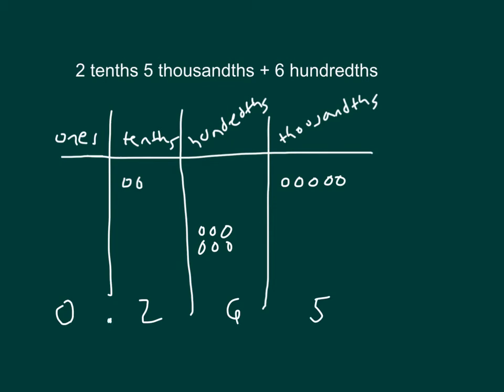There's a decimal point. Let's use our written method. First number is written as 2 hundred 5 thousandths. Next number is written as 6 hundredths. We can put a 0 in the thousandths place there. And we can show that addition. Again, the answer is 2 hundred sixty-five thousandths.